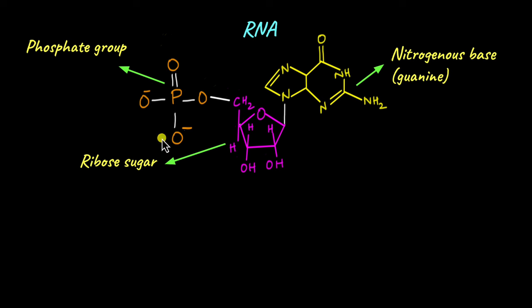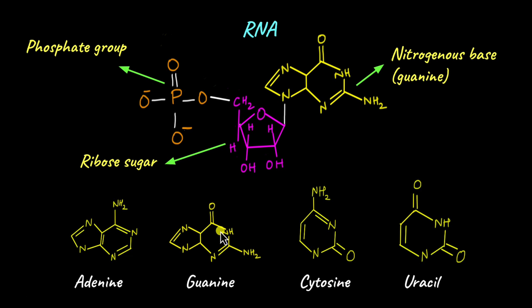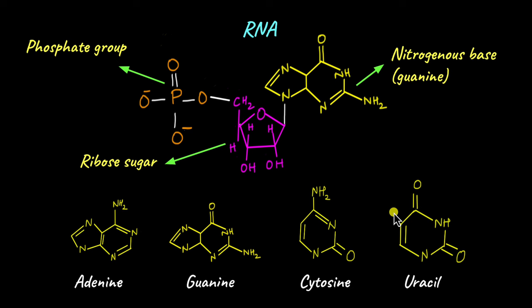The pentose sugar is ribose in RNA. Three of the nitrogenous bases are common between DNA and RNA: adenine, guanine, and cytosine. But instead of thymine, RNA has something called uracil. Uracil and thymine are structurally almost similar — they differ in that there is no methyl group in uracil, whereas a methyl group is found in thymine. RNA contains only uracil and DNA contains only thymine.